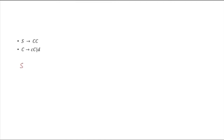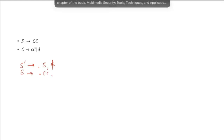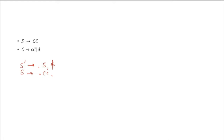We have to augment the grammar first, so S-dash goes to dot S comma dollar. Dollar will follow as the lookahead for the starting symbol. For this production rule also, dollar will become the lookahead. Next we have to add capital C, as it appears in the production.